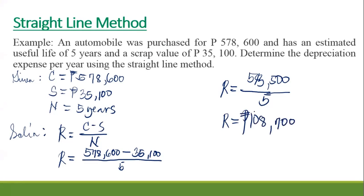So that is the depreciation — within five years. From your 578,000 pesos, you used the vehicle for five years, so hopefully you got your money's worth from it. Alright, that's the straight line method.